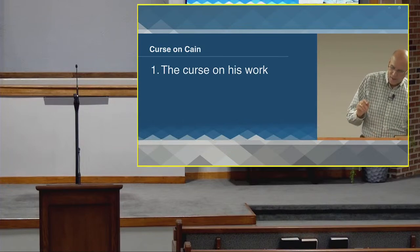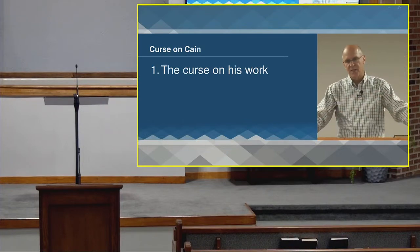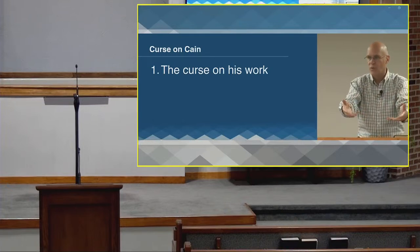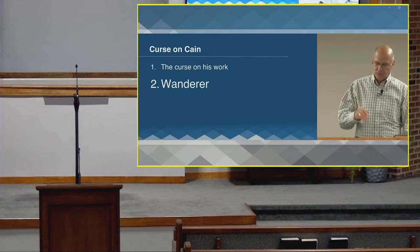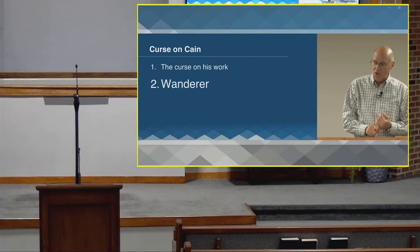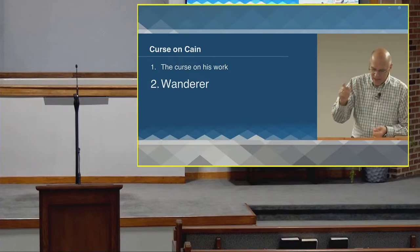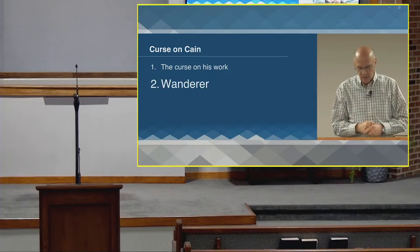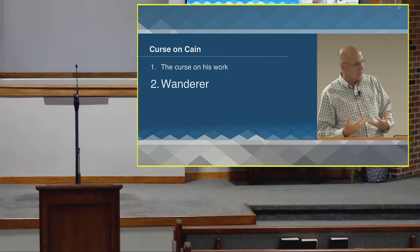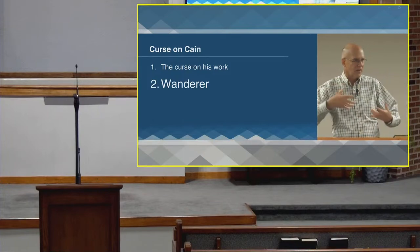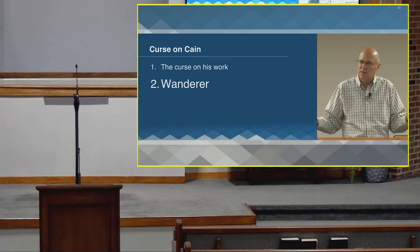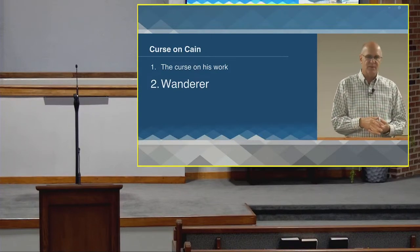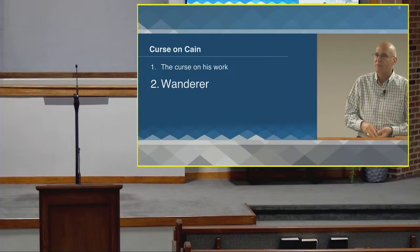God tells Cain: you've shed innocent blood in the ground. You are a farmer — the ground's not going to work for you anymore. And secondly, he will become a wanderer. He's allowed to live, contrary to the law of capital punishment. God allows him to live, but his life is going to be an unpleasant one — a state of restlessness. This word 'wanderer' doesn't just mean geographically, but inside — a state of restlessness. We have those feelings from time to time, but this was going to be Cain's state of being from now on.